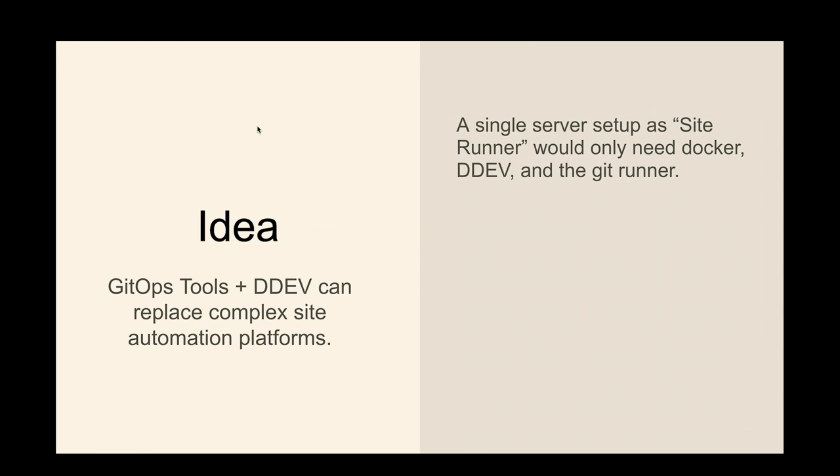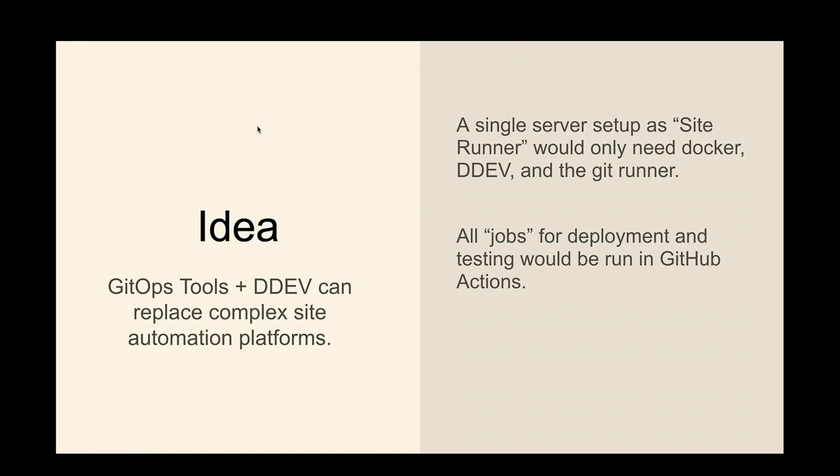A self-hosted GitHub Actions runner is called a runner. If you put that on any server, it will run whatever. It limits all jobs for every single deployment. It's tracking GitHub Actions. We can put Drush in there — GitHub Actions runs on a schedule, just runs Drush cron. We can see it in the logs, we know the site's up. It runs a log every hour. All users and secrets are just on the repo.